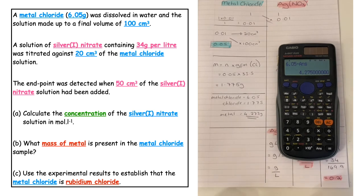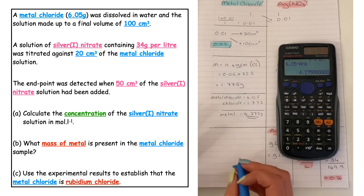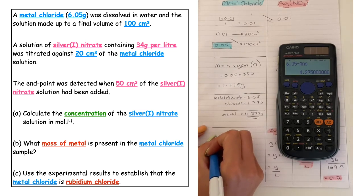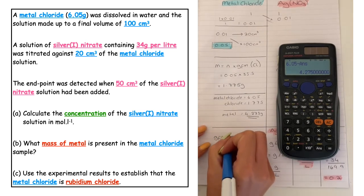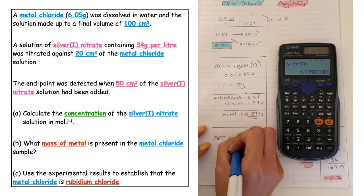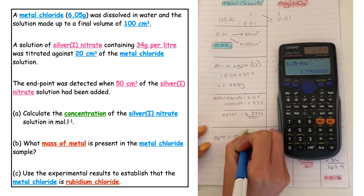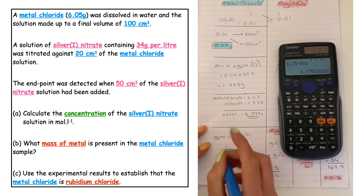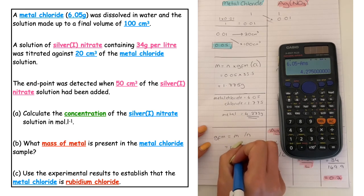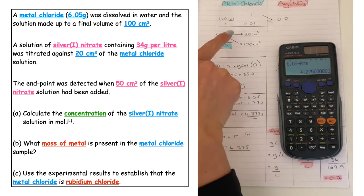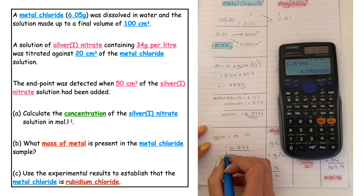The information we can collect from rubidium using the data booklet is the gram formula mass. If we wanted to use the information we already have: GFM equals m over n. The mass we calculated in the previous part is 4.275. We need to divide it by the number of moles of our metal chloride, which is 0.05.